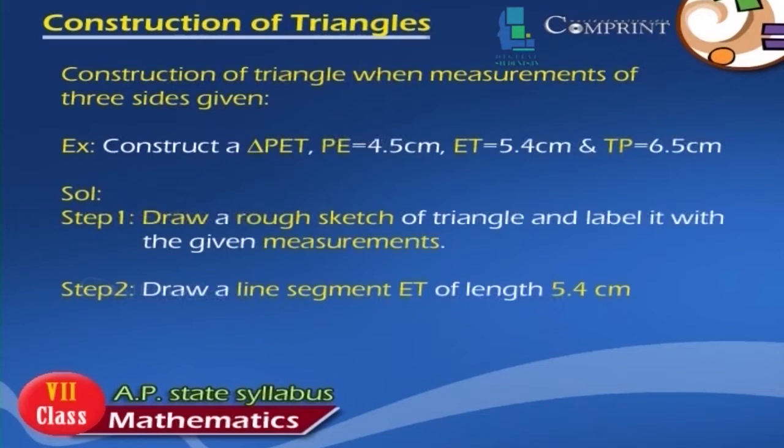Step 1: Draw a rough sketch of the triangle and label it with the given measurements. Step 2: Draw a line segment ET of length 5.4 cm.